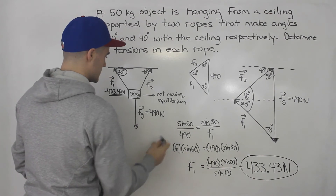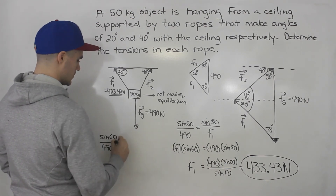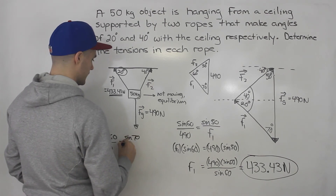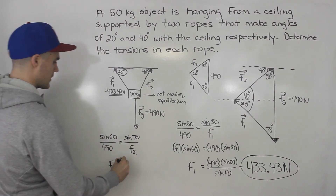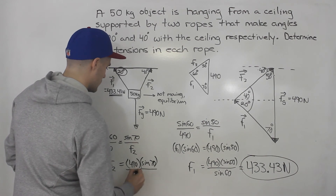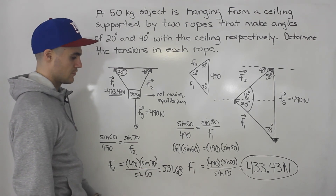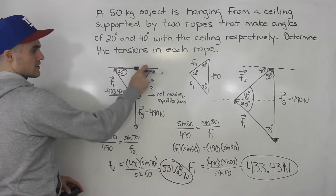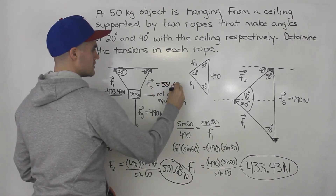Now let's solve for F2. Same thing: sine 60 over 490 equals sine 70 over F2. When we cross multiply and isolate for F2, we have 490 times sine 70 all over sine 60. When you do that in your calculator, you end up getting 531.68 newtons. So that is the other answer — that's the tension of the second rope. F2 is 531.68 newtons.